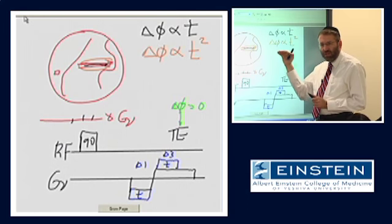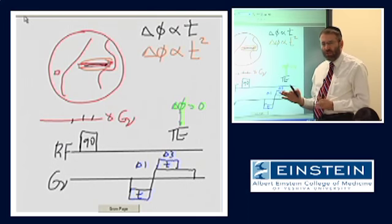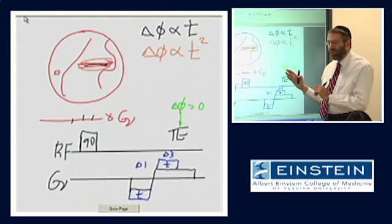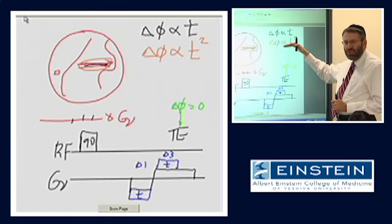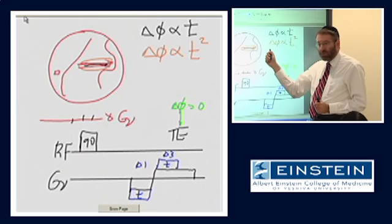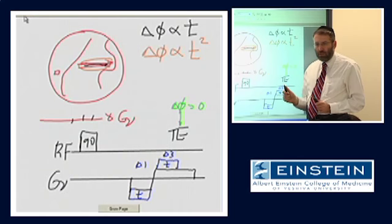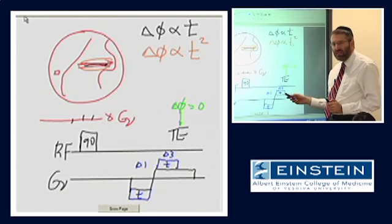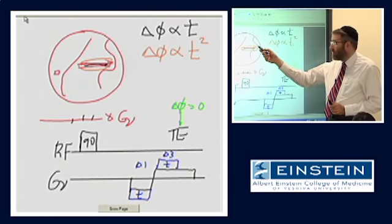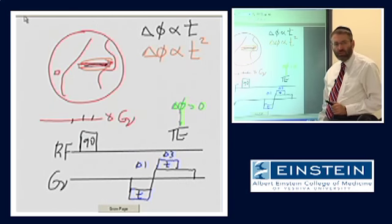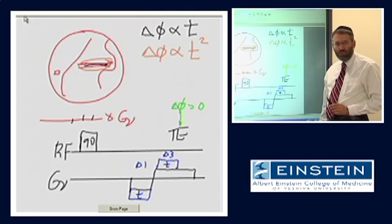As a result, what does the signal in the splenic artery look like at TE relative to the stationary signal in the liver? Given what we just said: the stationary spins — what I've written in one color is what's going on in the presence of constant velocity motion, and in another color for stationary spins — for stationary spins, the net phase shift at TE is zero. But for flowing spins, there is a net residual phase shift at TE.